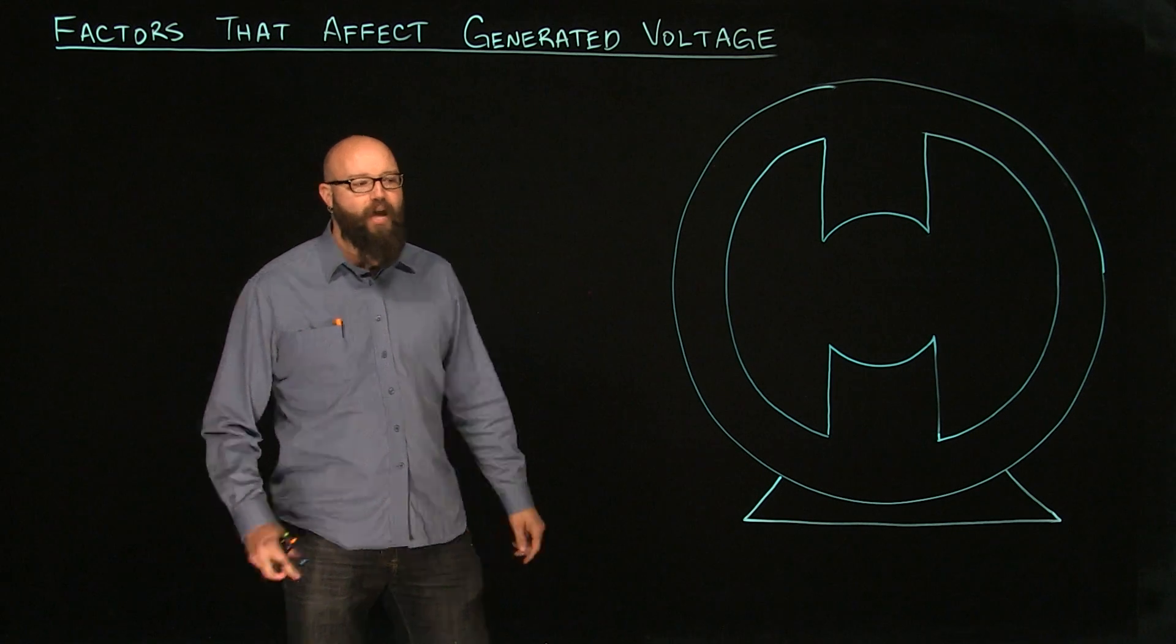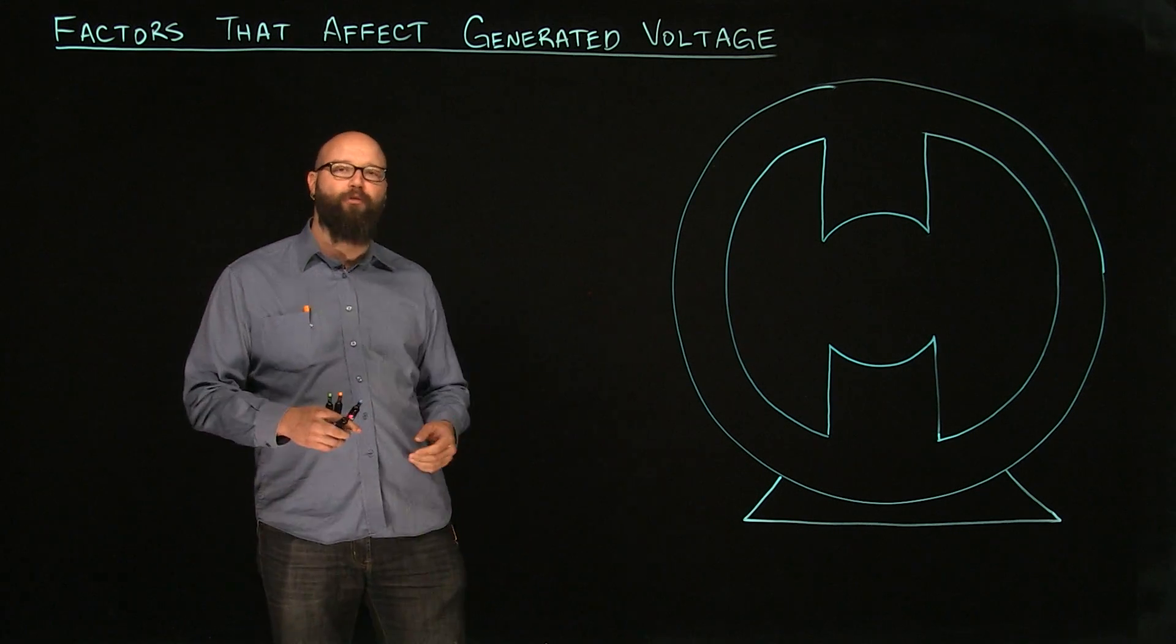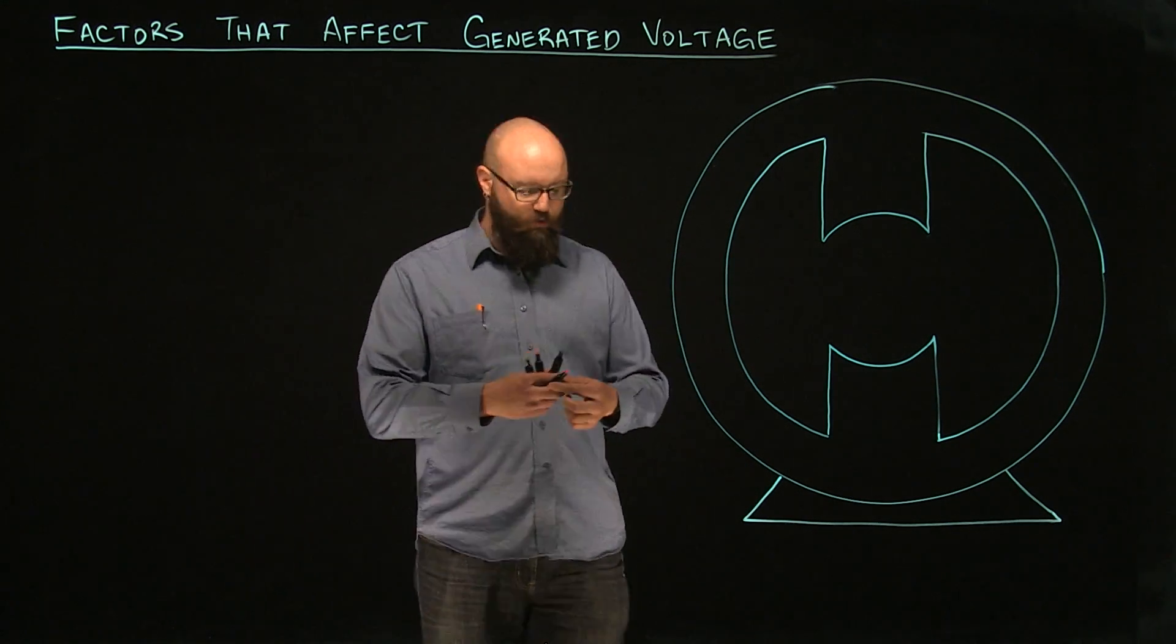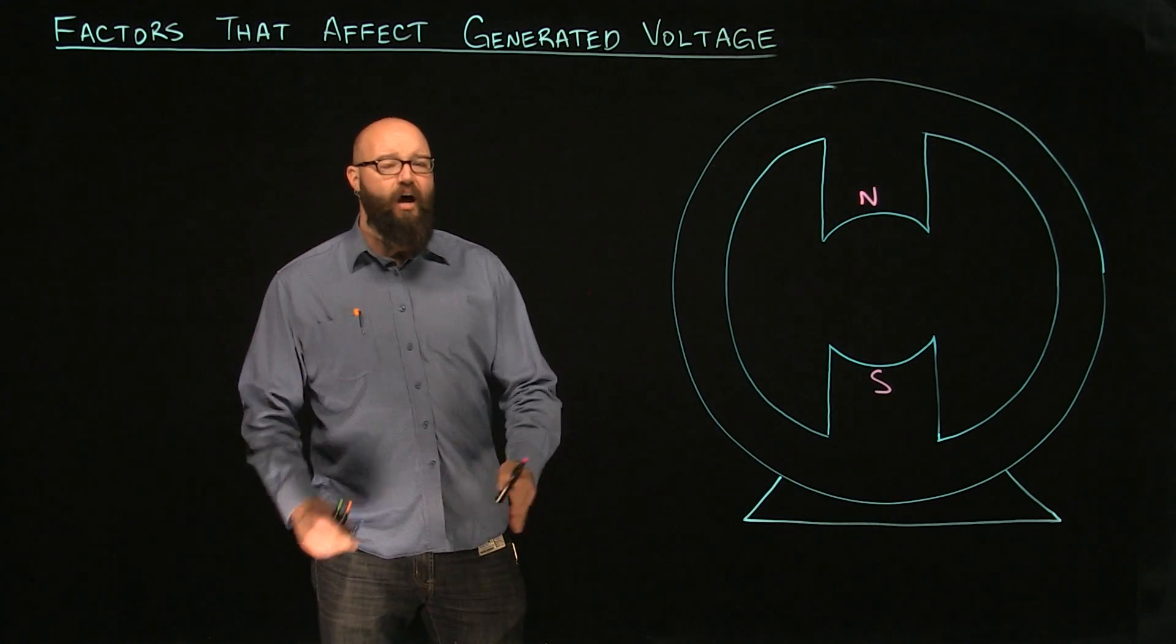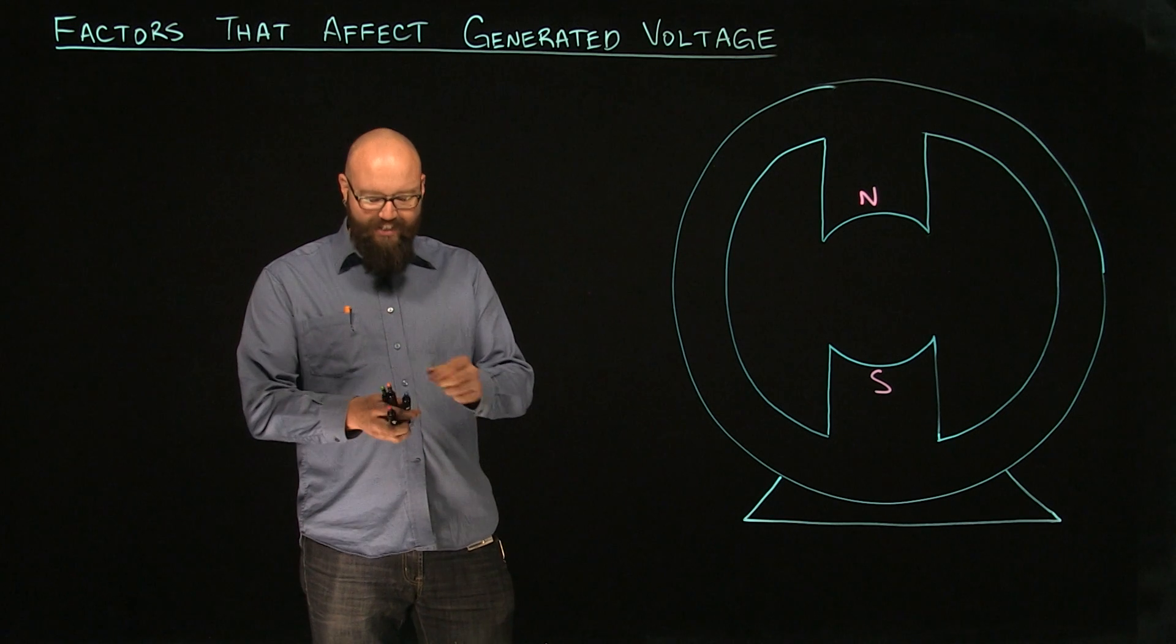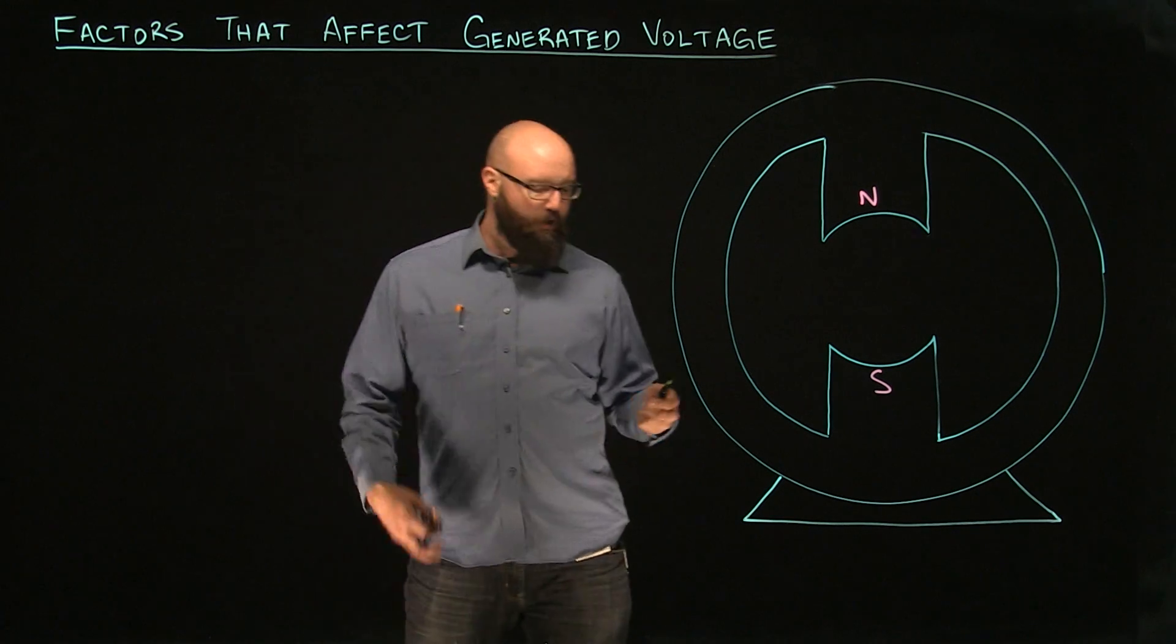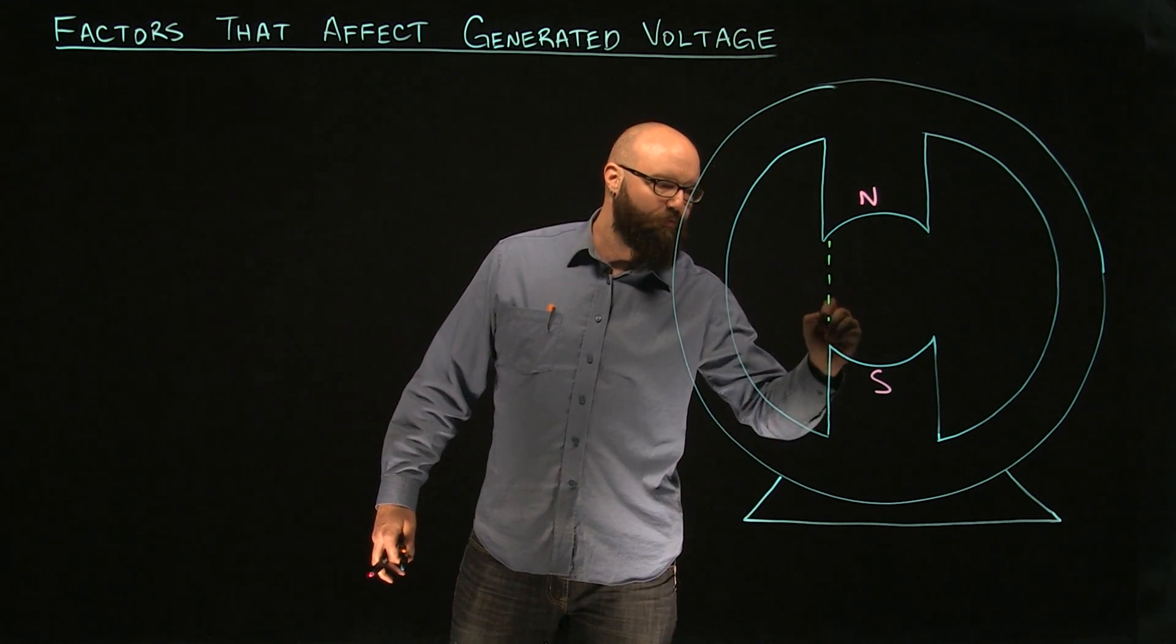So if you look here, we have our generator drawn out. Very simple generator. We have two poles. We'll call them North and South Pole here. These aren't very good magnets, but there is some amount of flux between these two poles. So we'll fire that on there.